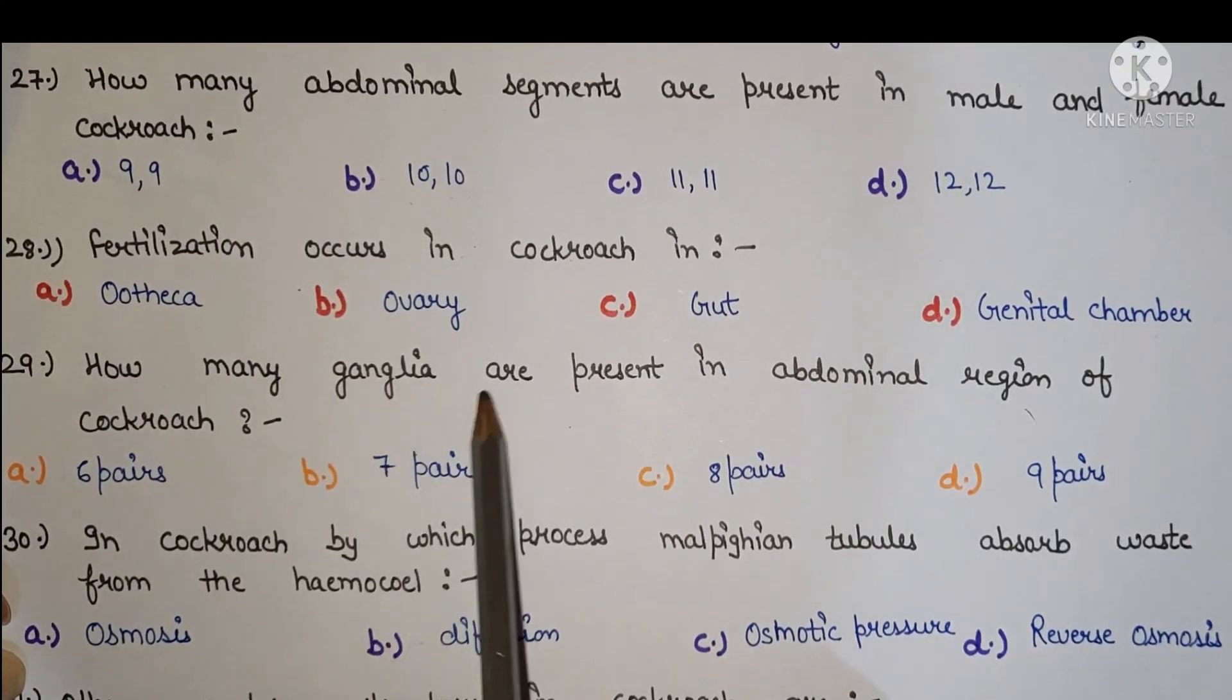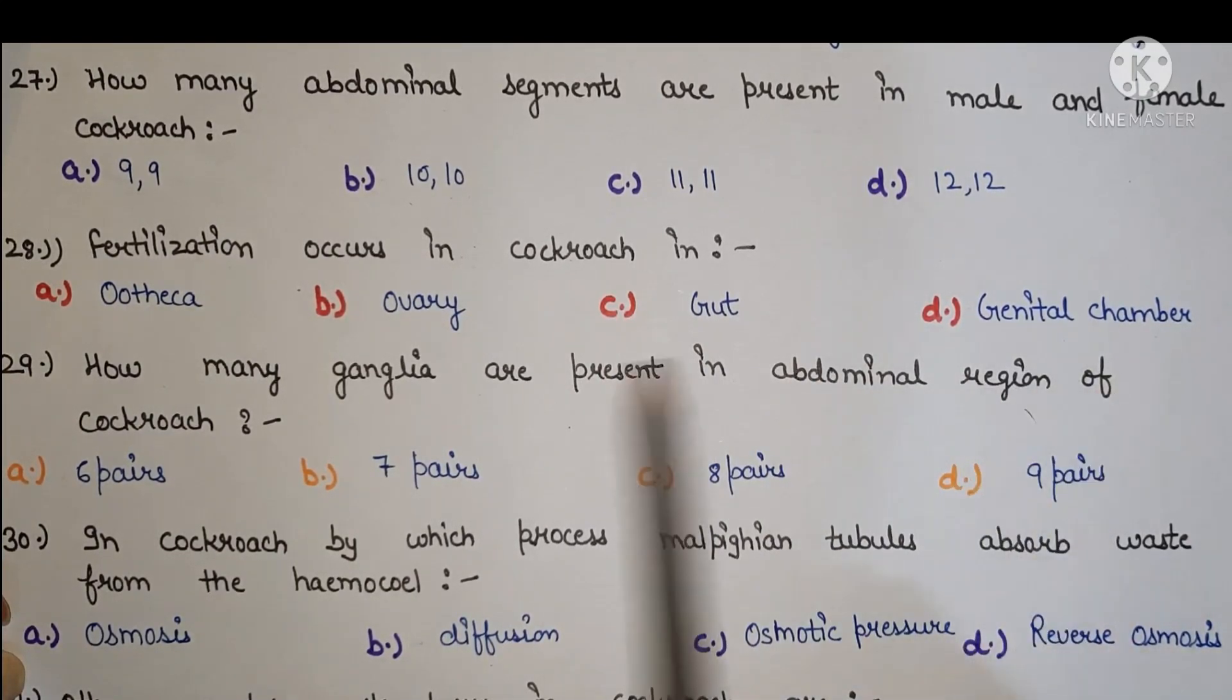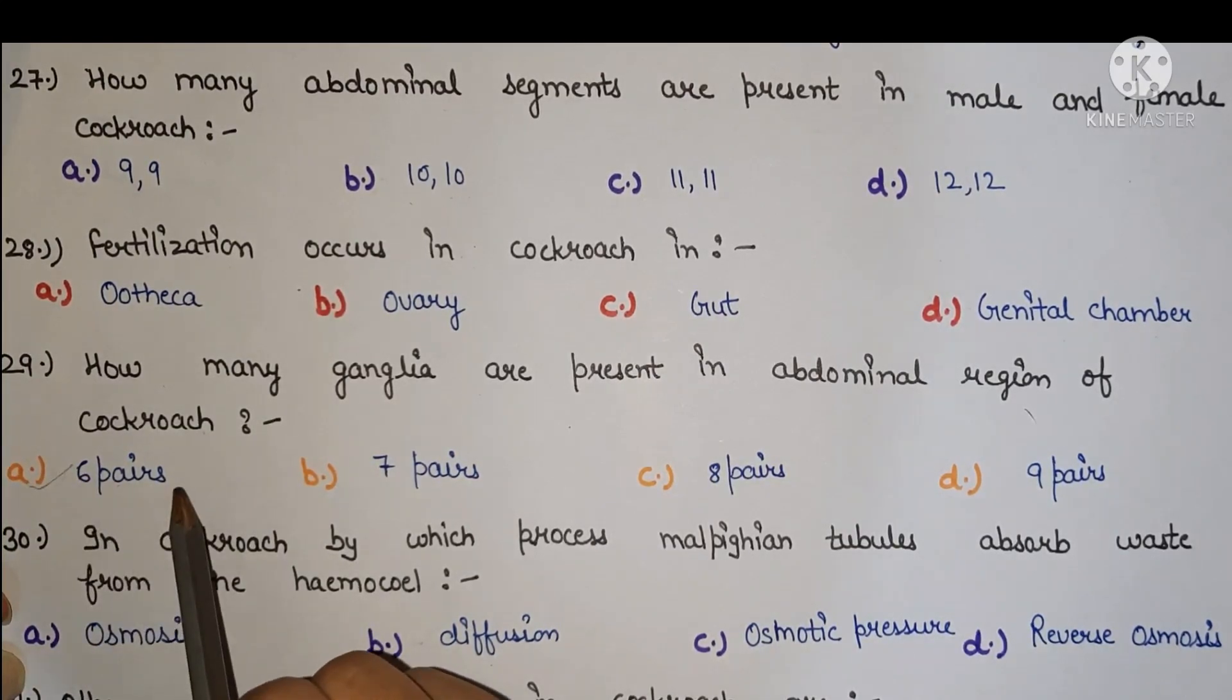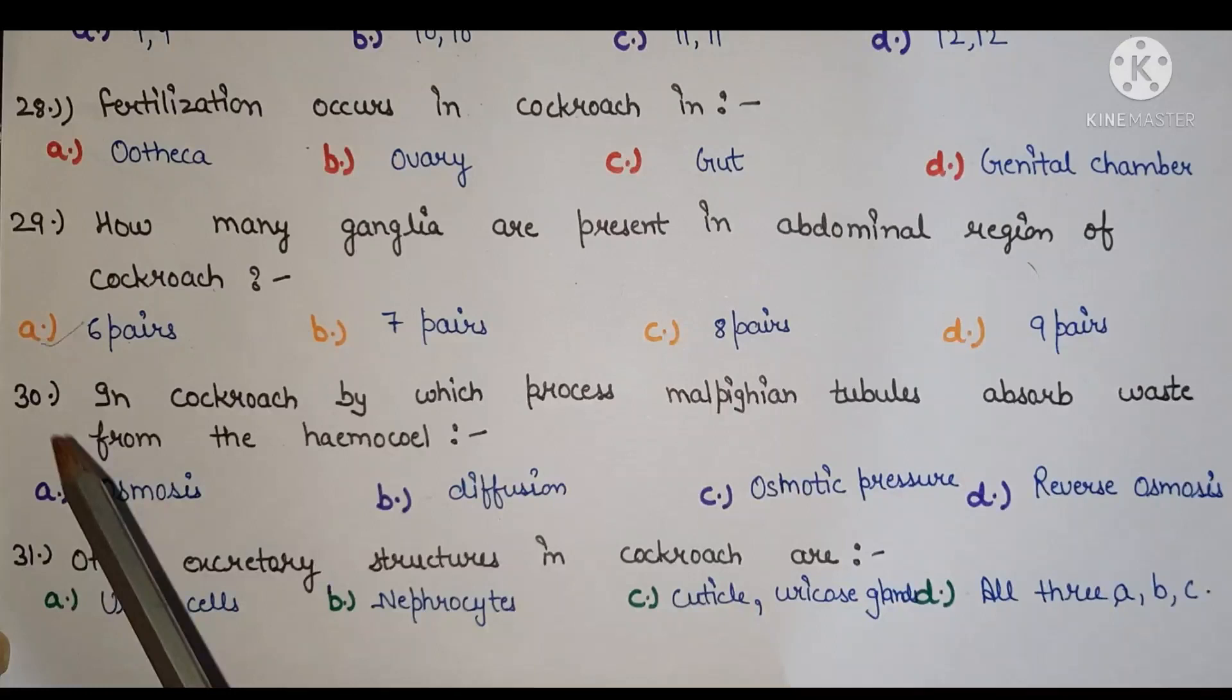Next, how many ganglia are present in abdominal region of cockroach? The right answer is A, six ganglia.